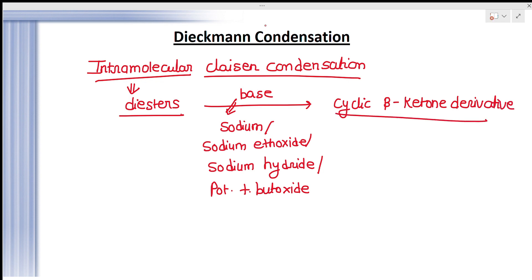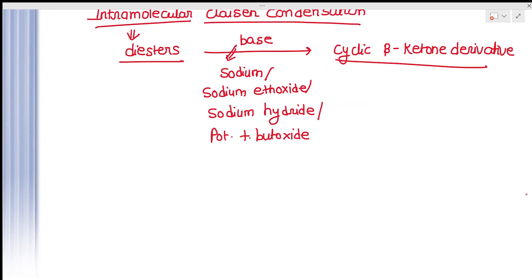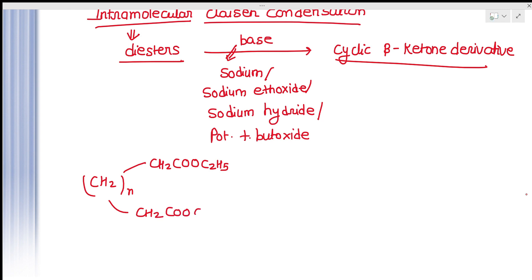Whenever diesters in the presence of base are treated, they form cyclic beta-ketone derivatives by intramolecular condensation — this is called Diekmann Condensation Reaction. For example, consider this diester: (CH₂)ₙ with CH₂COOC₂H₅ on each end. This is our diester.